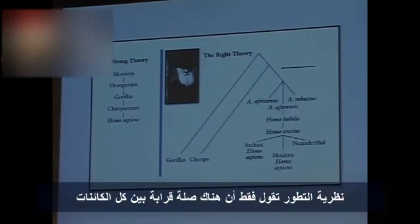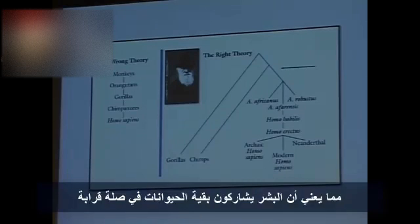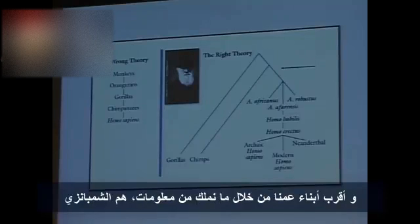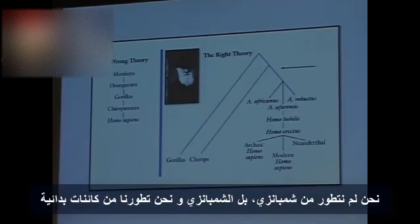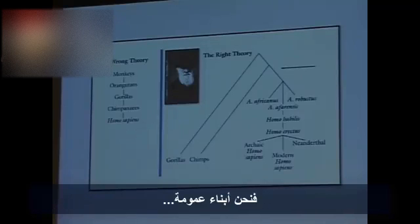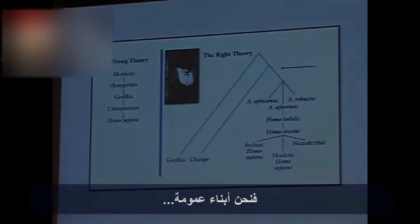The theory of evolution simply states that all living things are related. It means that human beings share some distant ancestry with other animals. Our closest relatives, as we know from lots of information, are chimpanzees. We didn't descend from chimpanzees — but chimpanzees and humans both descended from an earlier common life form. So we're sort of cousins, if you want to think of it that way.